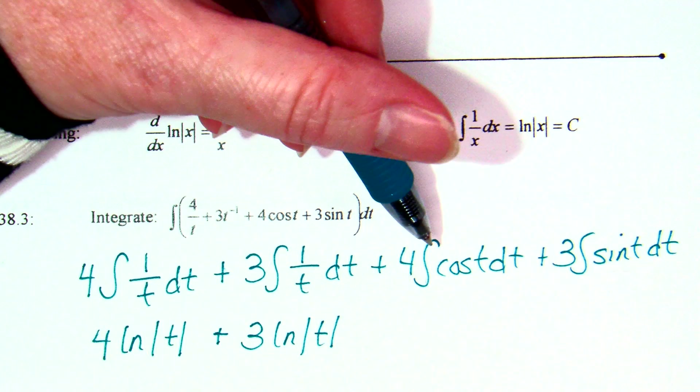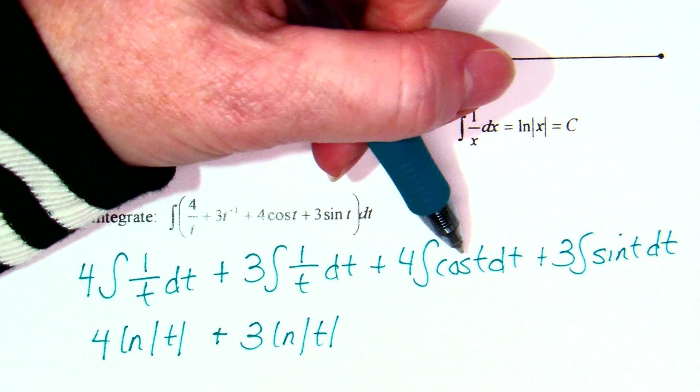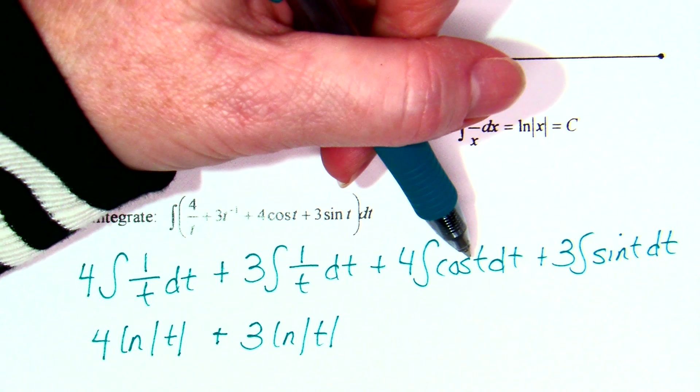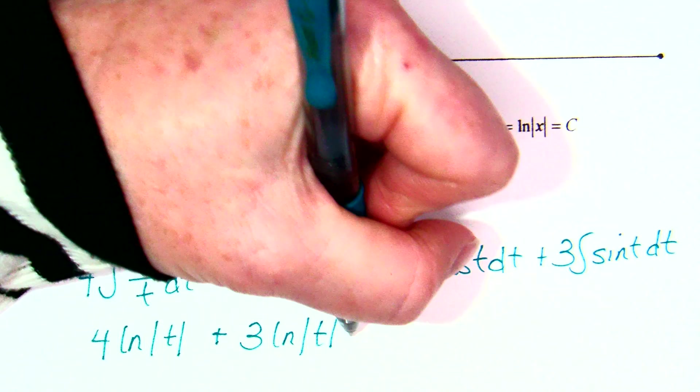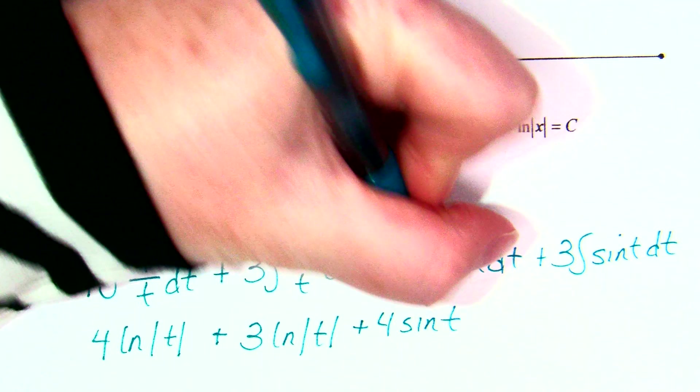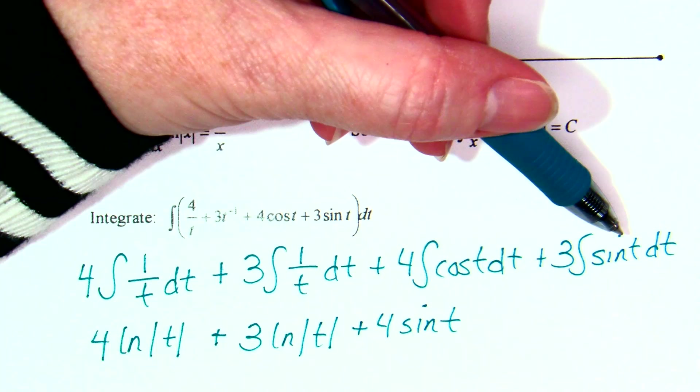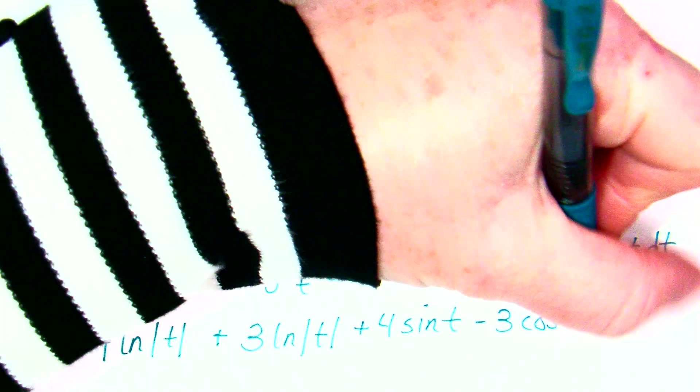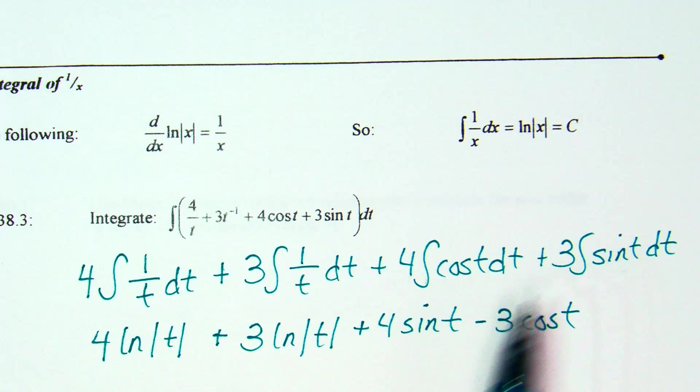Integral of cosine. Sine. Because the derivative of sine is cosine. So this is plus 4 sine T. Integral of sine. Negative cosine. So minus 3 cosine T. And on that one, I think, okay, normally, the derivative of cosine is negative sine. Since this is positive, then this is negative. And it was a plus C.